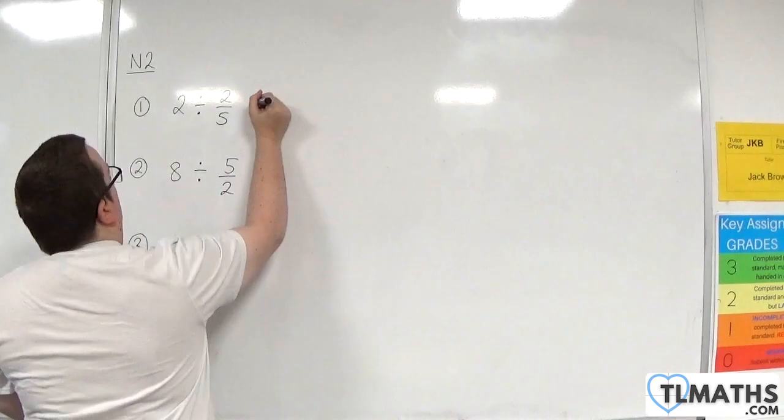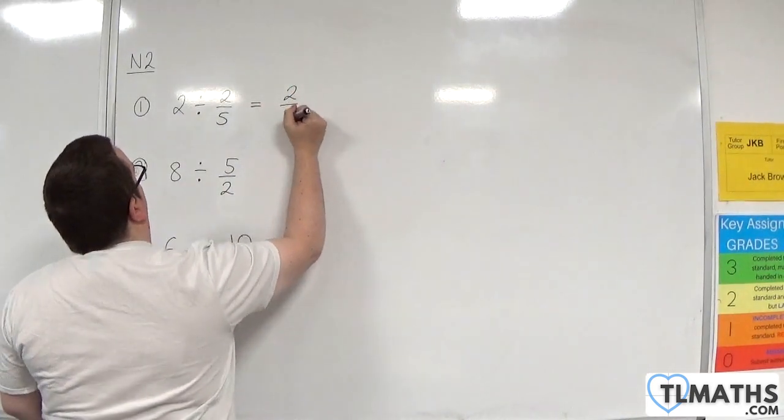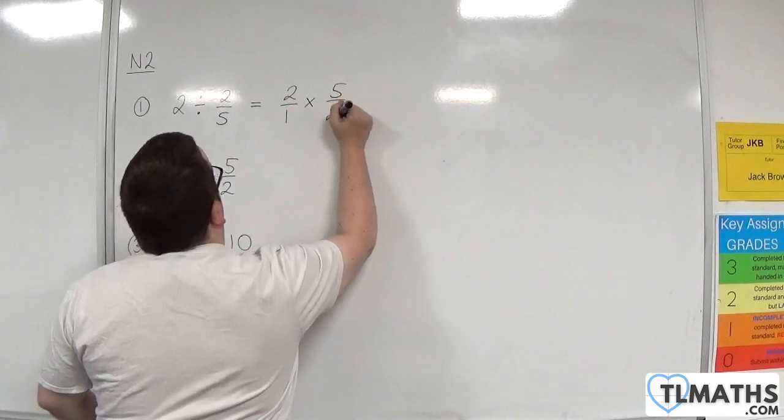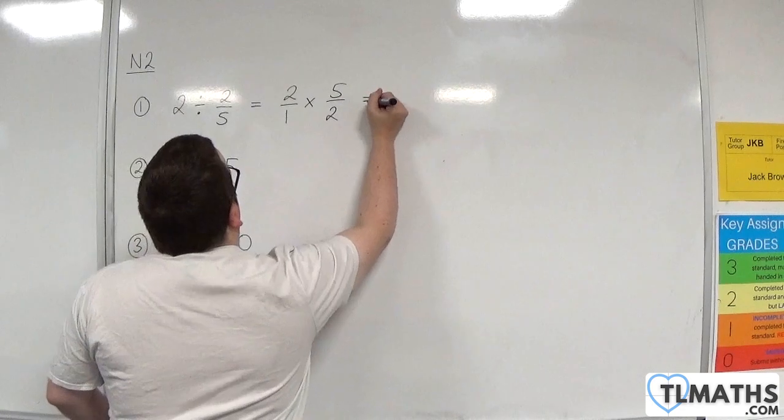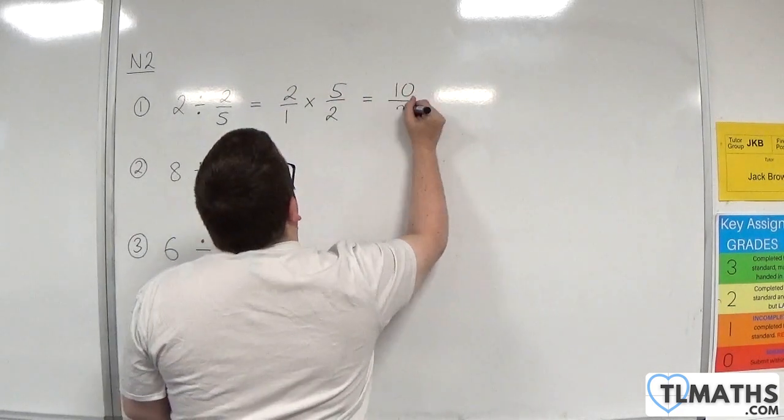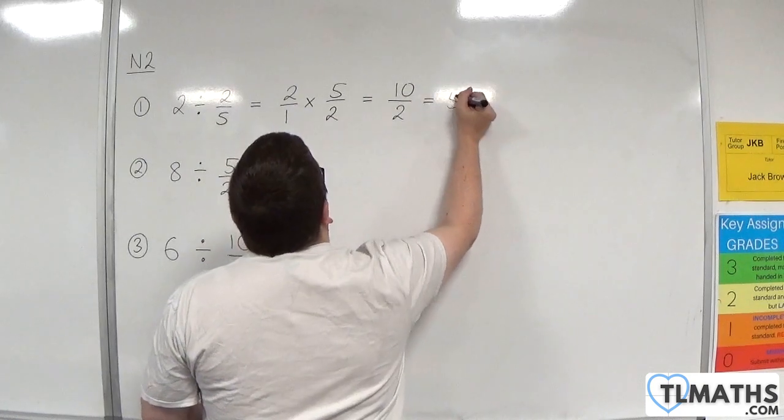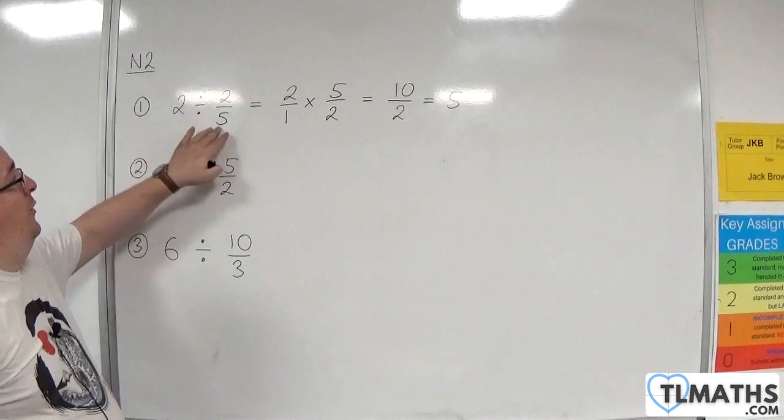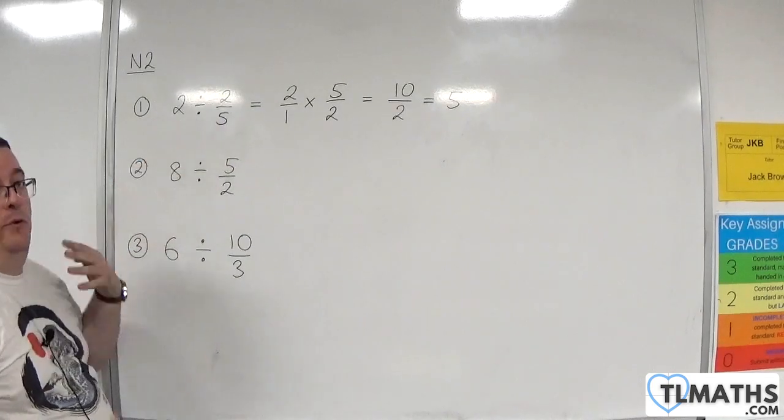First of all, rewrite the 2 as 2 over 1, and instead multiply by the reciprocal 5 halves. We have 2 times 5 is 10, 1 times 2 is 2, 10 divided by 2 is 5. What that's telling you is that 2 fifths goes into 2 5 times.